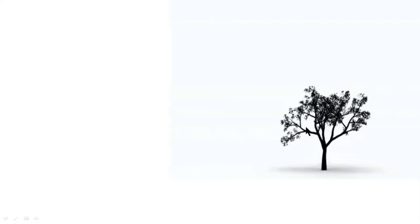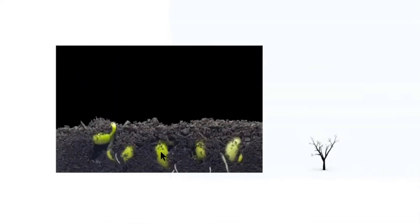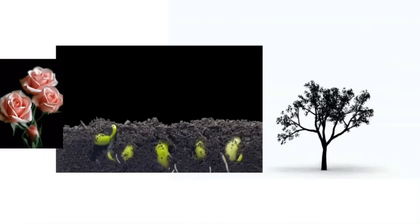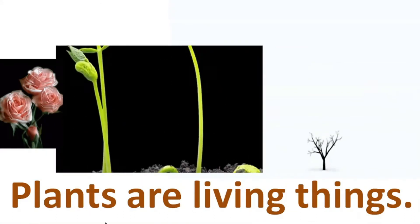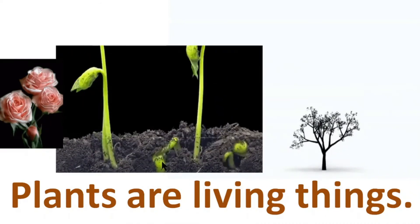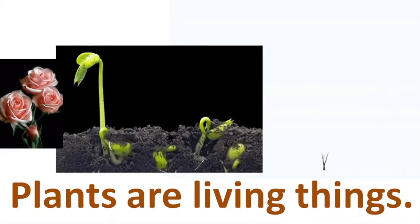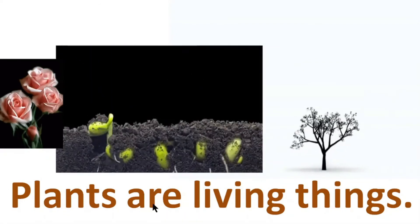Here we can see a plant is growing up — its trunk, branches, sub-branches, and leaves. In this picture we can see a plant growing up, and here a flower is blooming. So we can say plants are living things. Plants have life. They can grow up, just like us. So plants are living things.